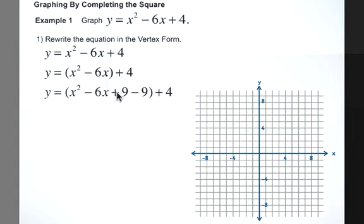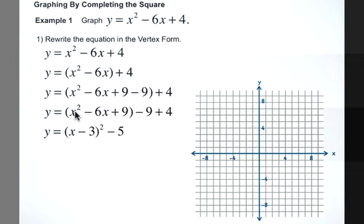It's 9. So if we add 9, we must also take it away. This is like adding 0. So we haven't changed anything about this actual expression. Here it is. We know that x squared minus 6x plus 9 can be factored to x minus 3 squared. Minus 9 plus 4 gives us our negative 5.